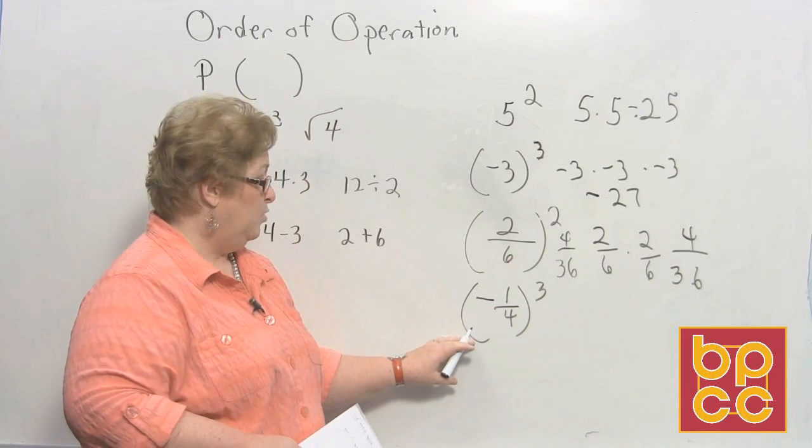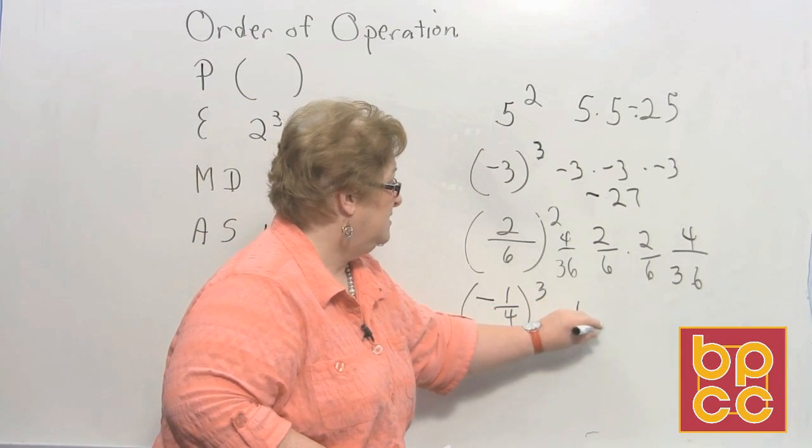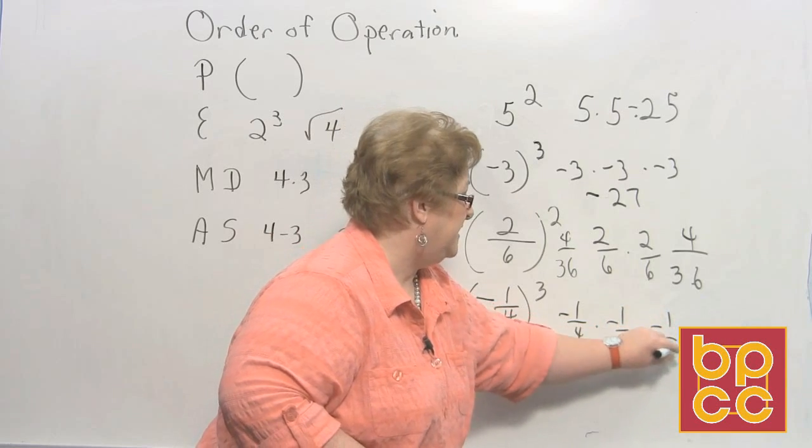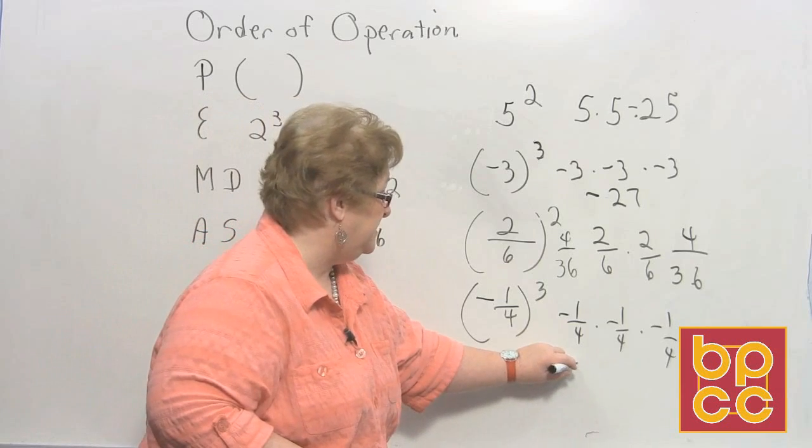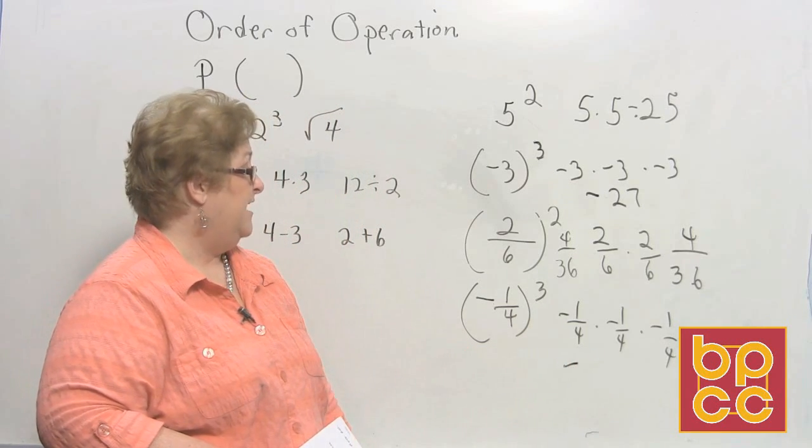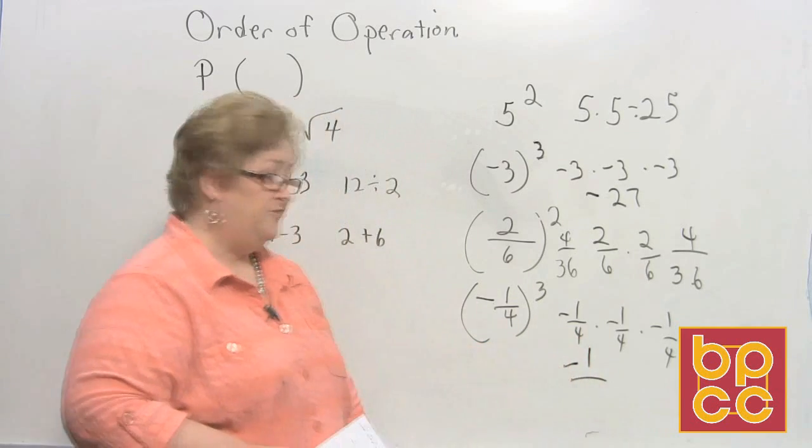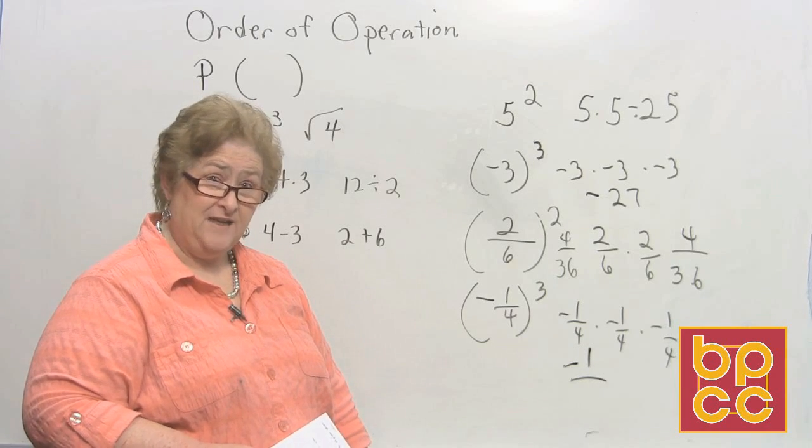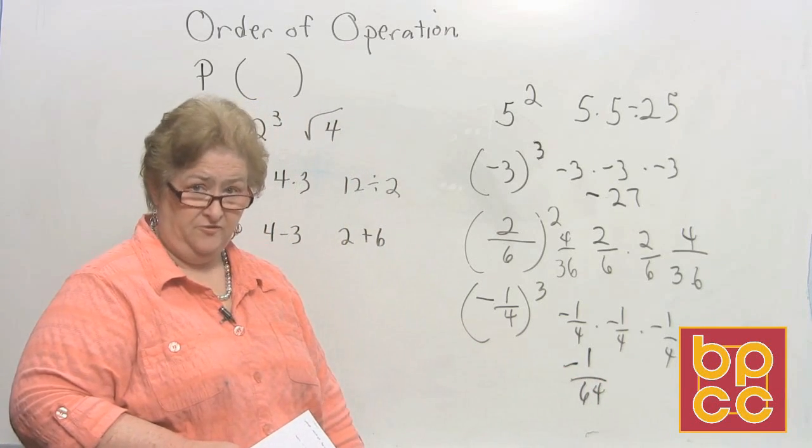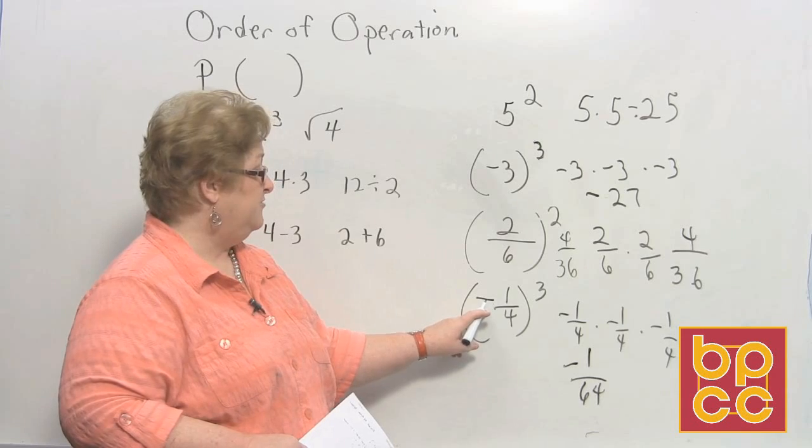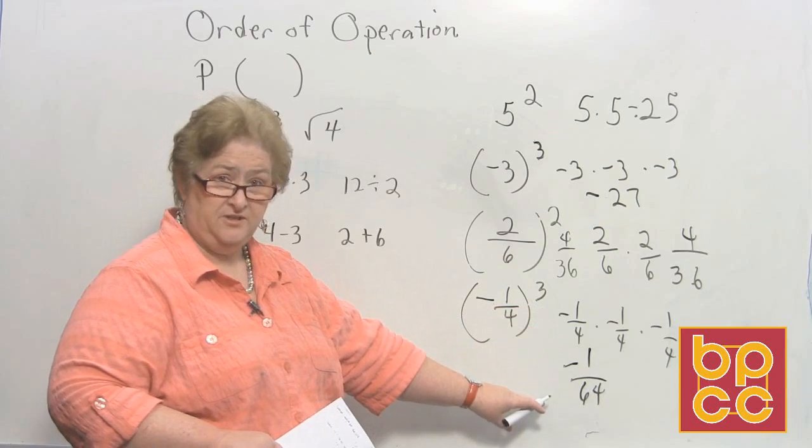And then our last one. Negative 1/4th to the 3rd is negative 1/4th times negative 1/4th times negative 1/4th. Once again we have 3 negatives an odd number of negatives so we know the answer is going to be a negative. And if we multiply the top we're going to have 1 times 1 times 1 which is a negative 1. And 4 times 4 is 16. And 16 times 4 is 64. But the answer is a negative 1 over 64. You could also multiply the negative 1 to the 3rd which will be a negative 1. And 4 to the 3rd which will be 64.